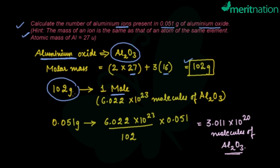So 102 grams is the weight of these many molecules. So what is given to us? This much weight: 0.051 grams. This is already known—that 102 grams is the weight of these many molecules. You need to find how many molecules are there in 0.051 grams. This you can simply calculate by the unitary method.